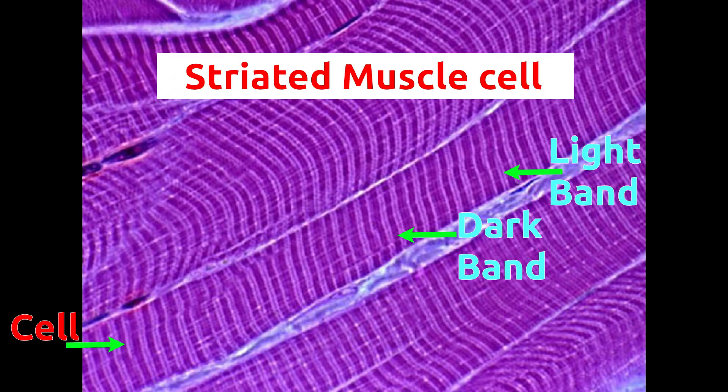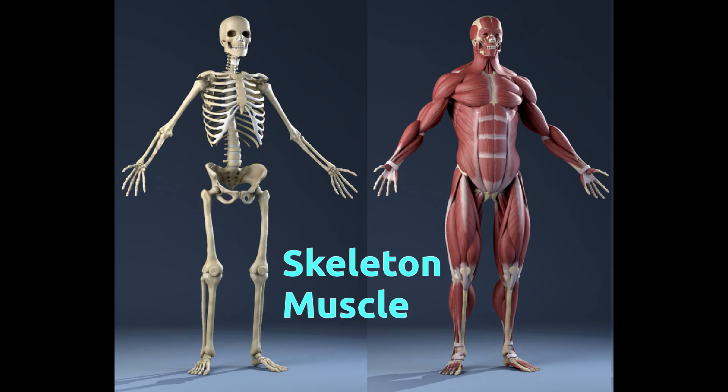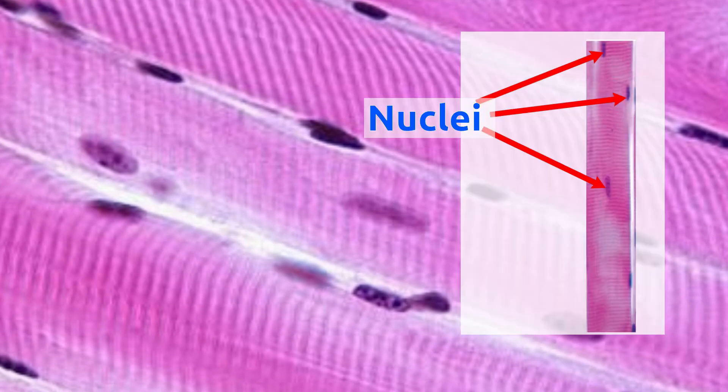Striated muscle got its name because of striations of dark and light bands on the cell surface. These tissues are attached to the skeleton and thus are also called skeletal muscles. Each skeletal muscle cell or muscle fiber is long and approximately cylindrical in shape, with many nuclei located at the periphery of the cell. Even though nuclei are located at the edge, they are covered by a membrane called sarcolemma.